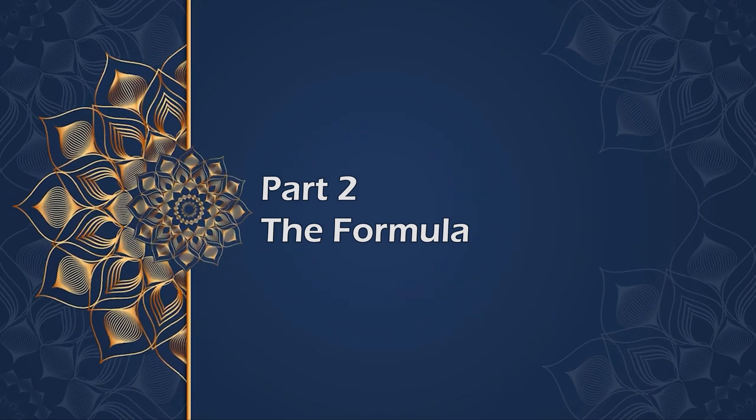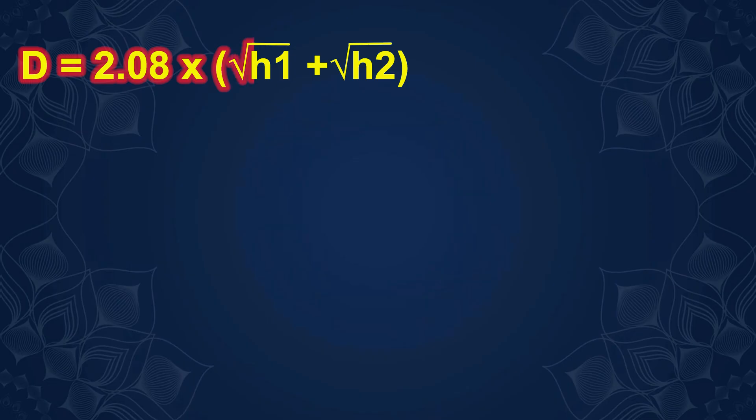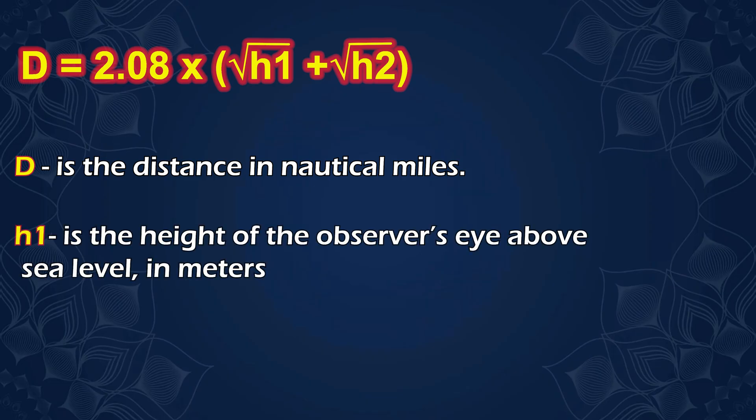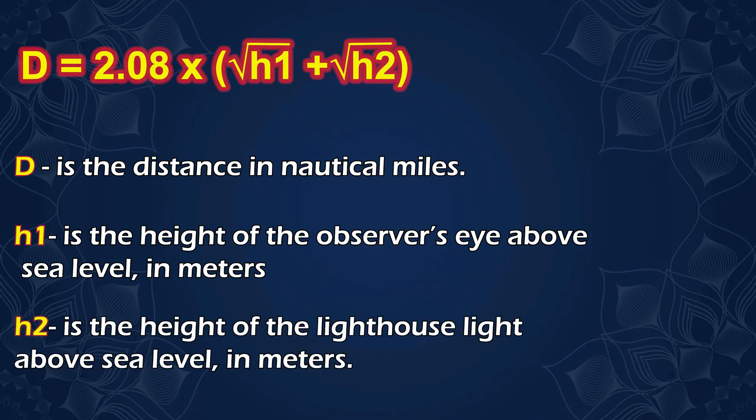Part 2. The formula. The formula for dipping range is simple. D equals 2.08 times the square root of h1 plus the square root of h2. Where D is the distance in nautical miles, h1 is the height of the observer's eye above sea level in meters, and h2 is the height of the lighthouse light above sea level in meters.